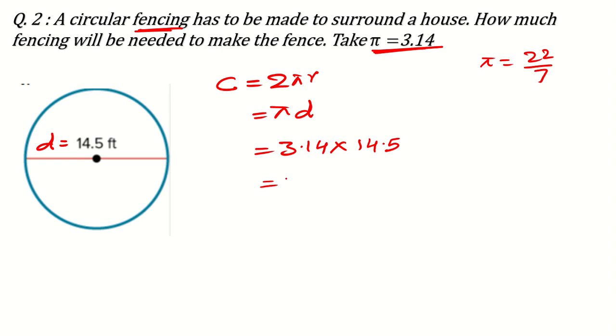If calculator is allowed, then definitely you will use the calculator here but if it is not allowed to you, then I will prefer you to practice for the multiplication also. Just to save your time, I am doing it by calculator. 3.14 multiplied by 14.5 is 45.53 feet. This will be the answer for this question.